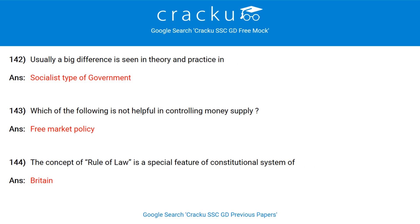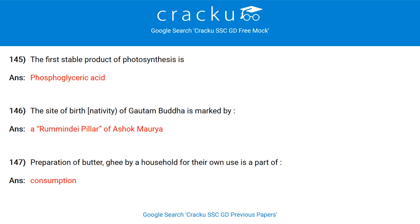Comptroller and Auditor General of India acts as a friend, philosopher and guide for the Public Accounts Committee. Usually, a big difference is seen in theory and practice in a socialist type of government. Which of the following is not helpful in controlling money supply? Free market policy. The concept of rule of law is a special feature of the constitutional system of Britain. The first stable product of photosynthesis is phosphoglyceric acid.